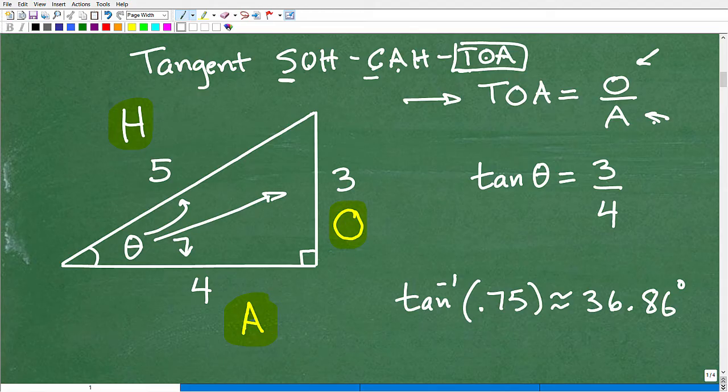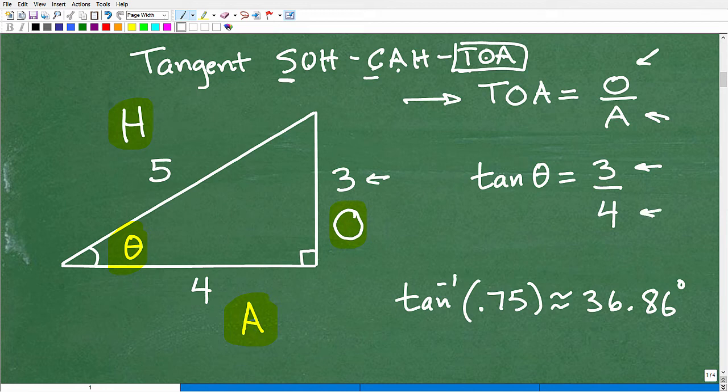All right, so knowing that, let's go back to our lovely triangle. And let's go ahead and obviously identify, here's the angle. And we said, what's the opposite of this angle? Well, that would be 3. So remember, I've got to do the opposite over the adjacent, so I'm going to plug in 3 for my opposite. And then what is the adjacent side of this angle? It's 4. So I plug that in right there. So 3 divided by 4 is the decimal 0.75.